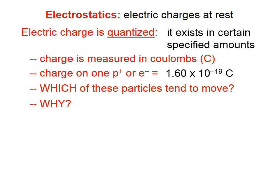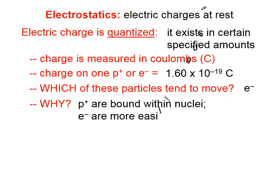Which of these particles tends to move? You should have learned that in chemistry, and that would be, of course, the electron. And you should have hopefully learned the reason for that, and that is that the protons are bound within the nuclei and so they can't move all that easily. Electrons, which we can think of as orbiting the nucleus, are more easily transferred between nuclei and are more easily moved through a material.